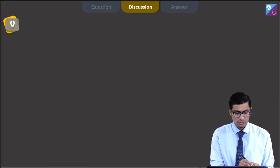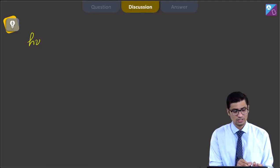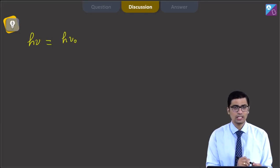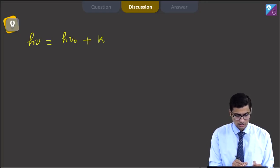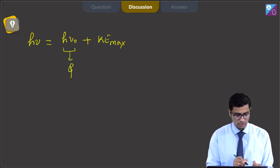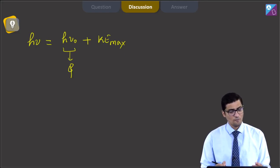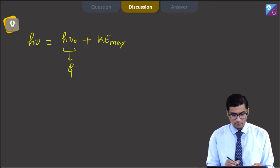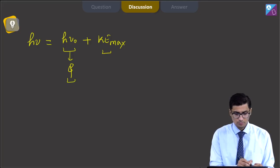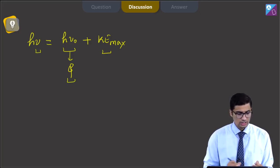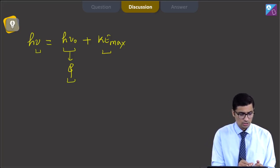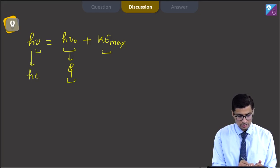Dear students, as per the Einstein's photoelectric equation, H nu that is the incident energy is equal to the work function plus maximum kinetic energy. This is also known as the work function and is usually represented by a symbol phi. Thus, the maximum kinetic energy depends upon the work function and the incident energy or the incident frequency which can also be written as Hc by lambda.